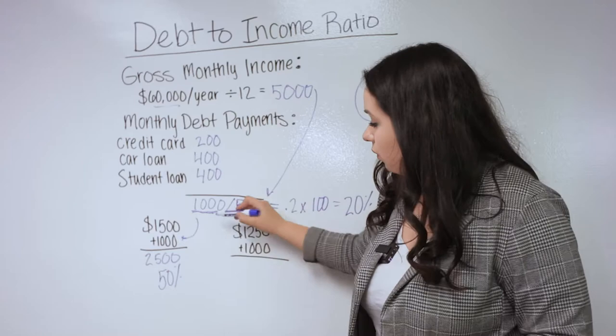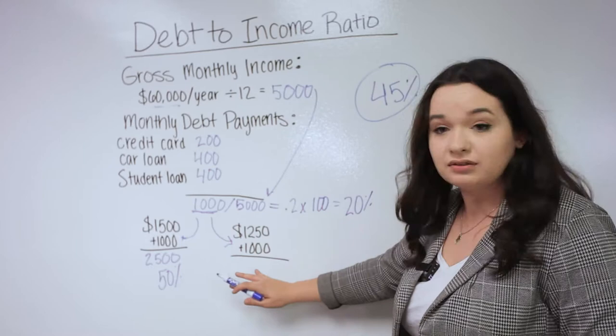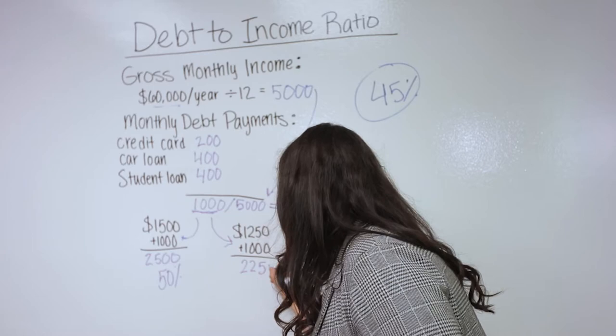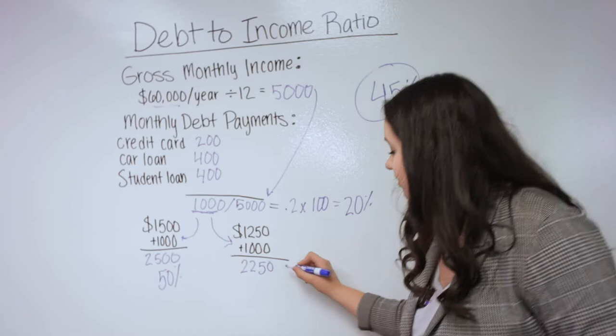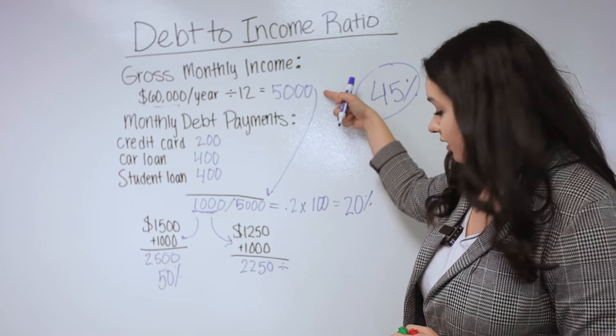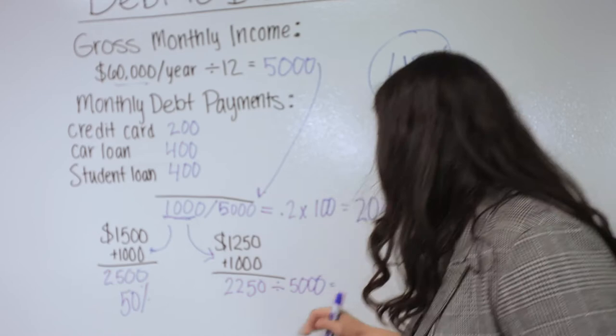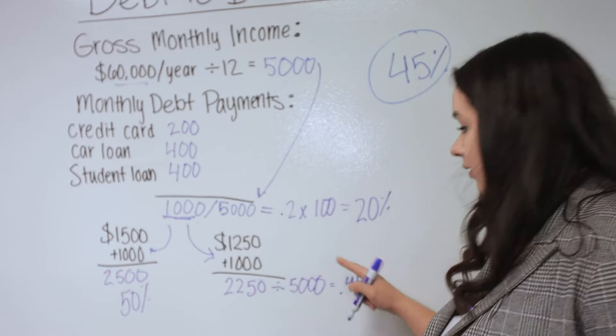We bring the monthly debt payments we already have and add those together with the new mortgage, which gives us $2,250. This $2,250 is our new monthly debt payment if we have a mortgage of $1,250. We divide this by our monthly gross income of $5,000, which gives us 0.45 times 100, or 45%.